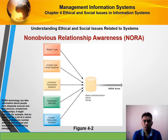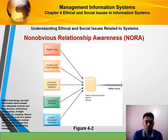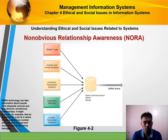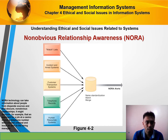This figure shows the non-obvious relationship awareness, or what we call NORA. NORA technology can take information about people from disparate sources and find obscure, non-obvious relationships. It may discover, for example, that an applicant for a job at a casino shares a telephone number with a known criminal and issue an alert to the hiring manager.